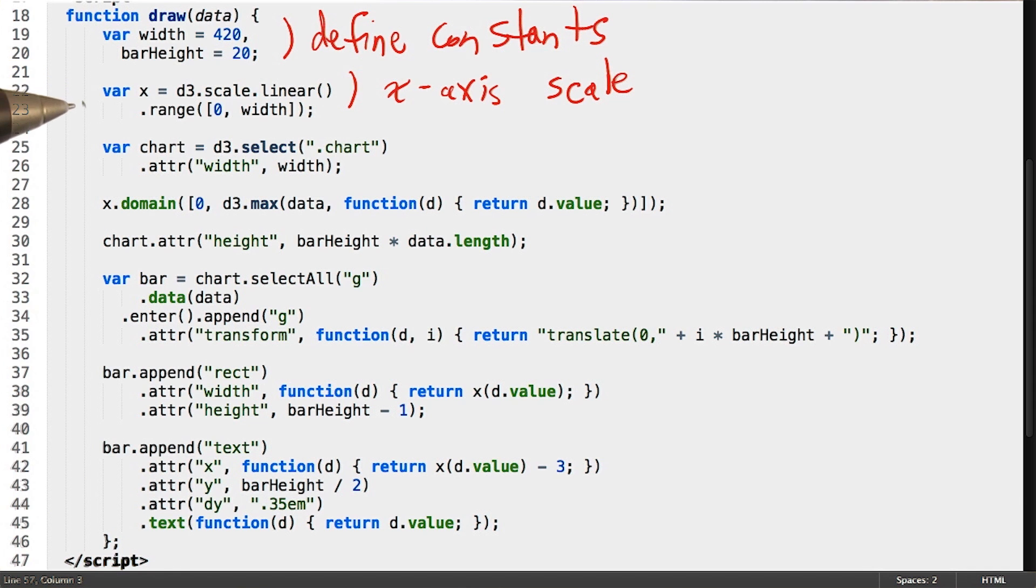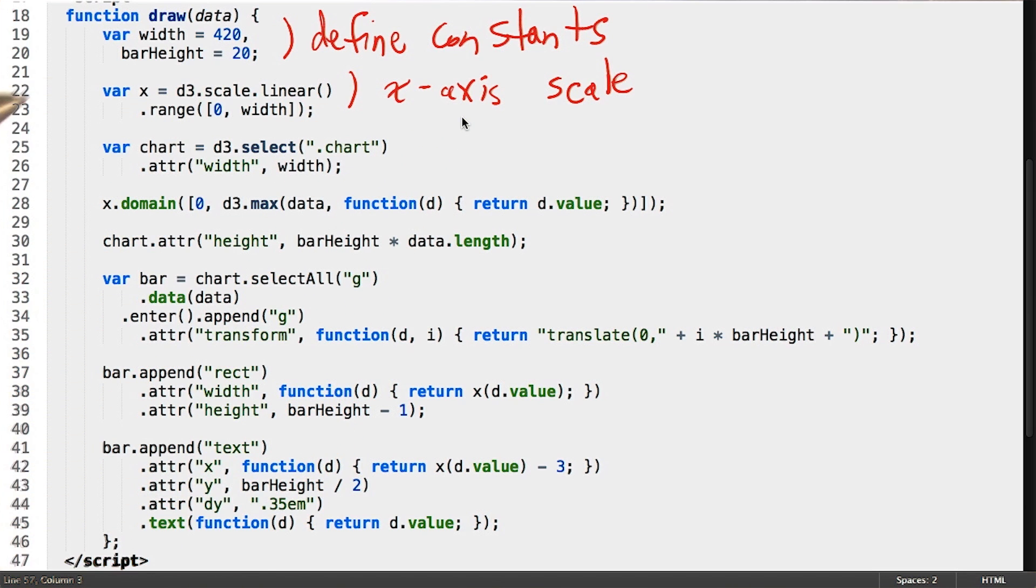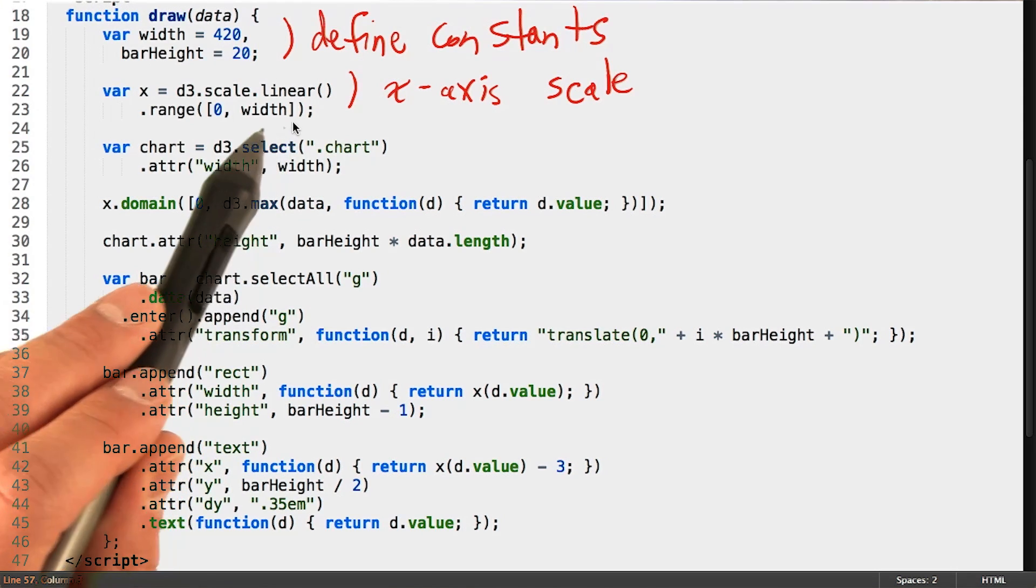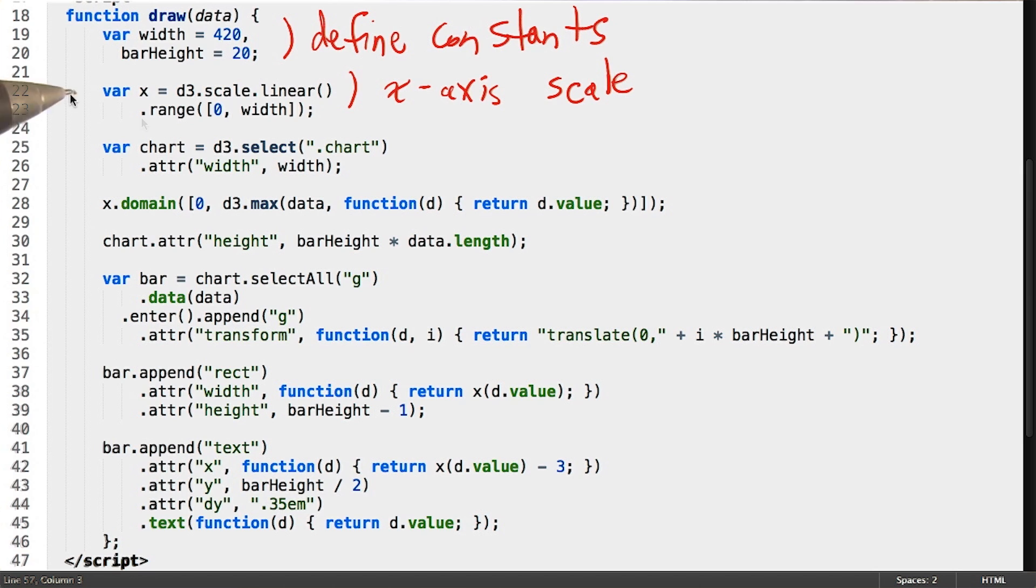A subtlety of this code here is that while I've labeled it as the x axis scale, and while the variable it's stored in is x, there's nothing specific to this code or its functions which define it as the x axis. We will see later that how we use it, however, creates the x values.